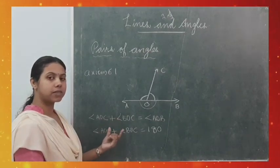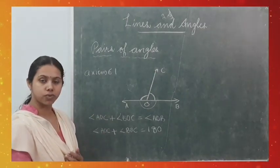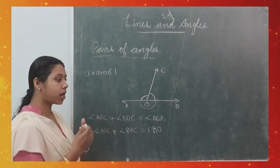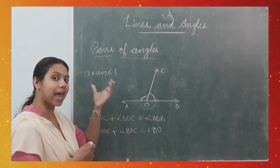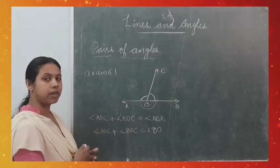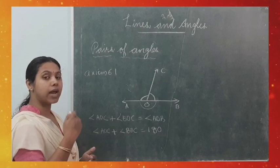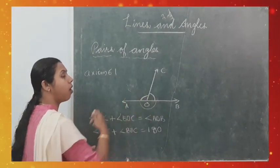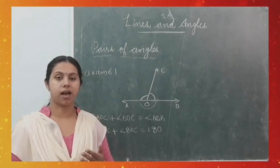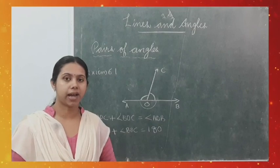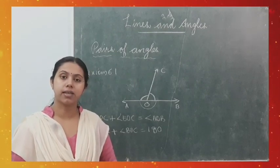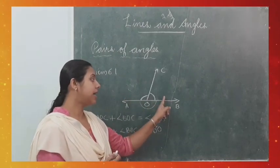Axioms are assumptions which are obvious universal truths. We know that a right angle is always 90° — no proof is needed. Statements that are not proved are known as axioms. So the first axiom in this chapter is: when a ray stands on a line, the two adjacent angles formed are supplementary, i.e., equal to 180°. Recall that when adjacent angles are 180°, they are called linear pair angles.